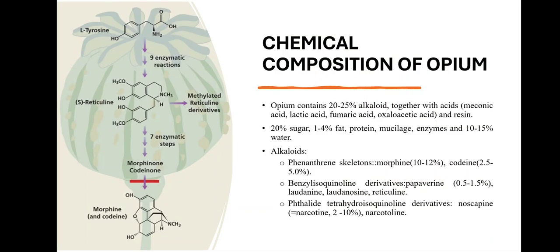Chemical composition of opium. Opium contains alkaloids together with acids — lactic acid, fumaric acid — and resin, 20% sugar, 1–4% fat, protein, mucilase, enzymes and water. Alkaloids include morphine, codeine, phthalide isoquinolines, noscapine, and narcotine.